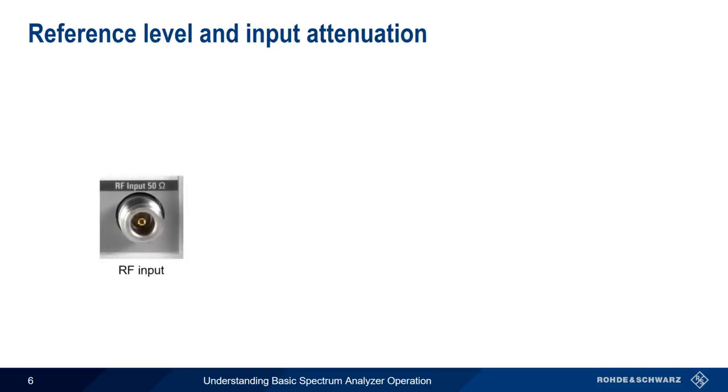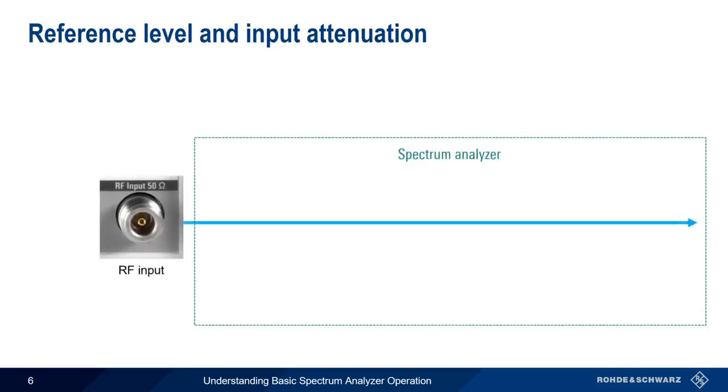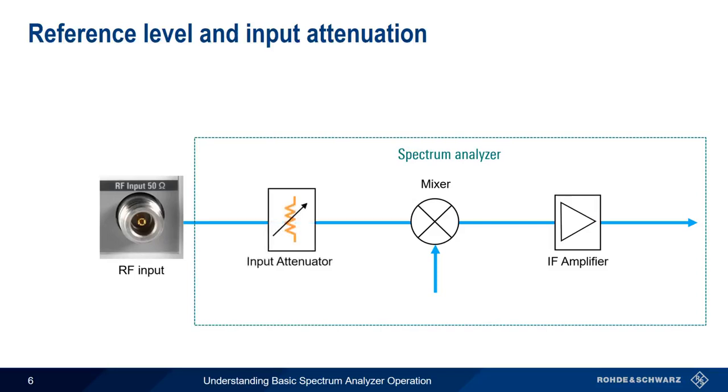Behind the RF input, some of the first sections of our spectrum analyzer include active components like mixers and amplifiers. If the input level is too high, these devices can go into something called compression, which creates distortion and negatively impacts our measurement results, sometimes very severely. To prevent this from happening, a variable input attenuator is placed between the RF input and the sensitive components. When we set the reference level, this value is used by our spectrum analyzer to adjust the input attenuation and/or the IF amplifier gain in order to avoid overloading the instrument.